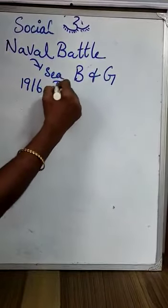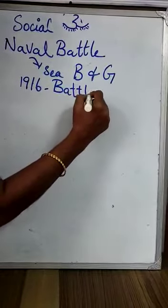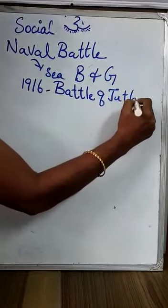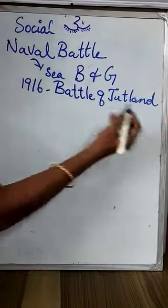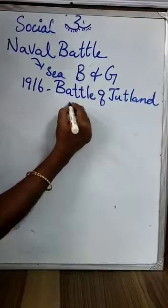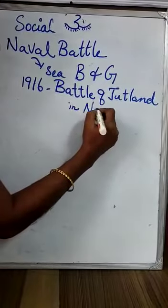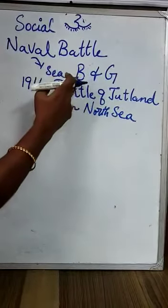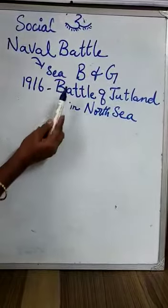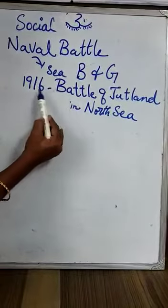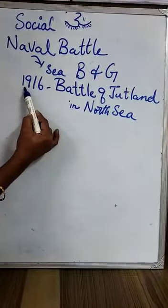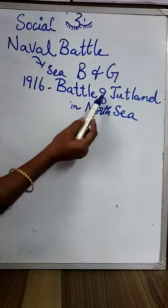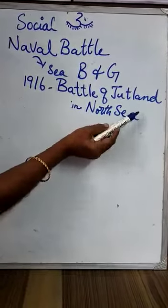That battle is called the Battle of Jutland. The Battle of Jutland took place in the North Sea. In the North Sea they fought between Britain and Germany — that battle took place in 1916. That battle is named the Battle of Jutland. This is one naval battle.